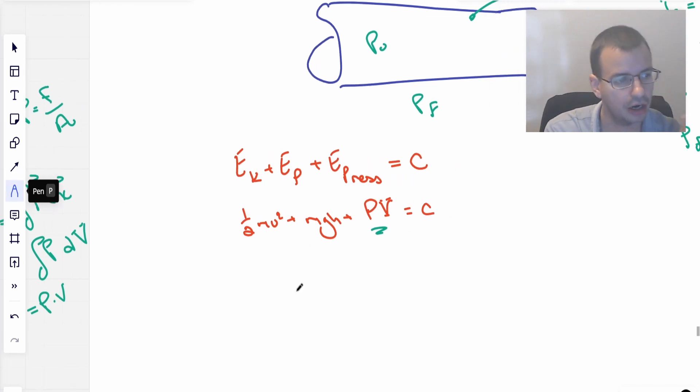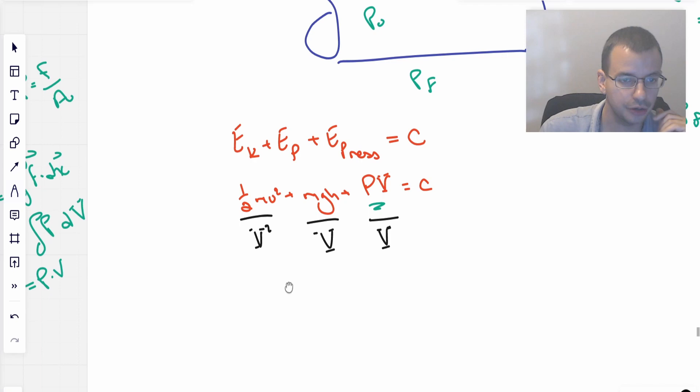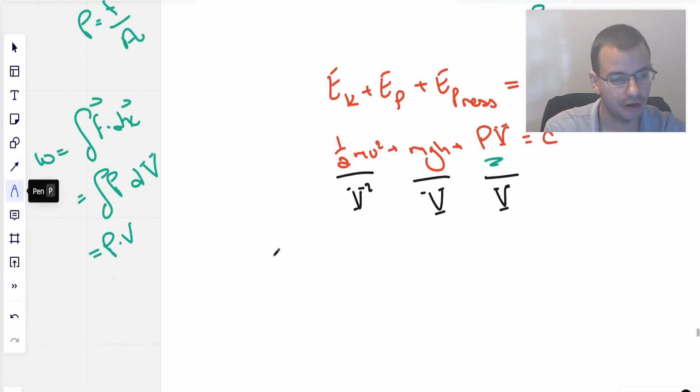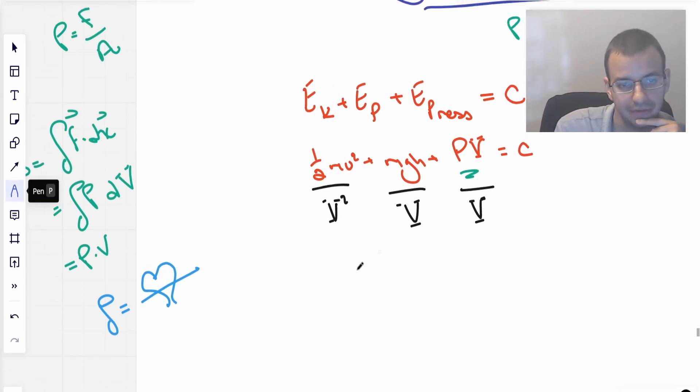Now we're going to take our energy balance equation that we have here, divide everything by volume. Another quick slight sidebar. Mass divided by volume is density. The mnemonic I use for this is density symbol rho equals love. Put an arrow through it. You have mass on top, V on bottom, mass divided by volume. So density is mass divided by volume.